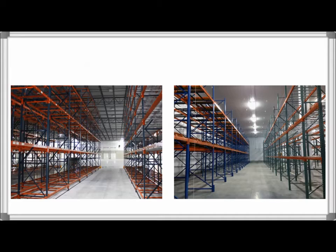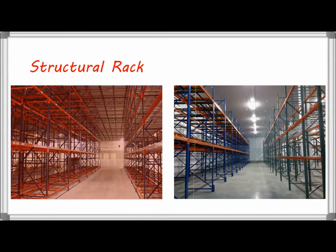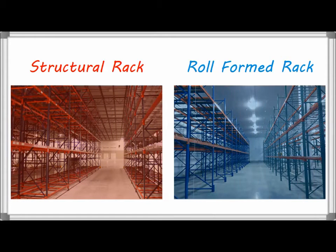The main difference between these two is how they are made. Structural steel is formed while still hot, whereas roll form steel is formed after it's cooled. The outcome of these processes is two different types of rack with different ideal uses and benefits.